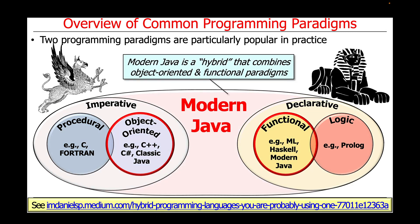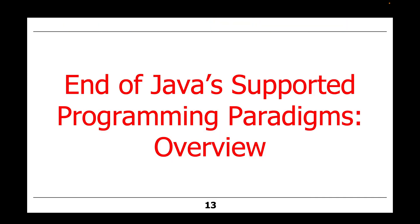In fact, modern Java should be considered a hybrid language that combines elements of both the object-oriented and functional paradigms. You'll get a chance to learn lots about that as we go through more of the material in this lesson and throughout these courses. That's the end of the overview of Java's supported programming paradigms. We'll now go into more detail on imperative and declarative elements of Java.